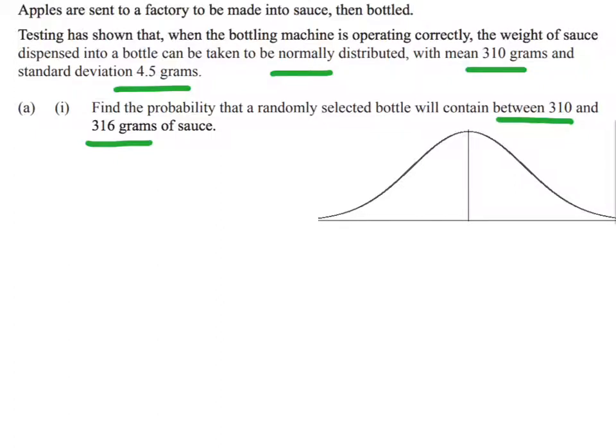The first thing I want to do is draw my bell-shaped curve and put my mean of 310 and standard deviation of 4.5 underneath.